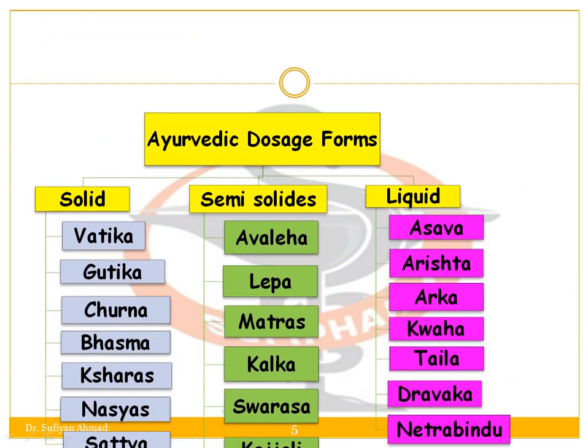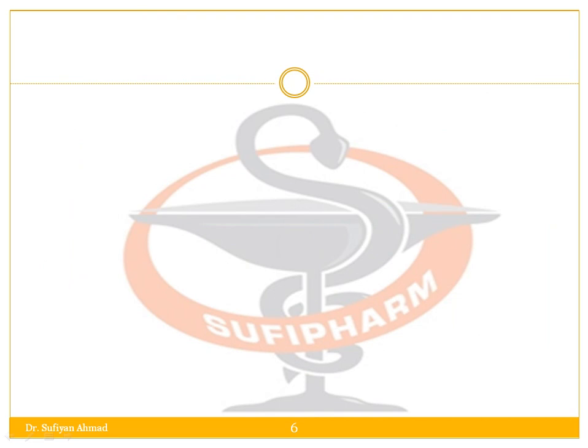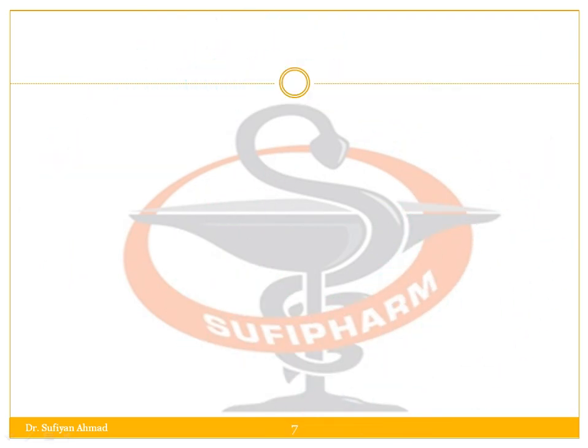Ayurvedic dosage forms can be classified as solid dosage forms, semi-solid dosage forms, and liquid dosage forms. In this session I have covered the liquid dosage forms — examples being Asava, Arista, Arka, Kashaya, Taila, Dharavaka, and Netravindu.